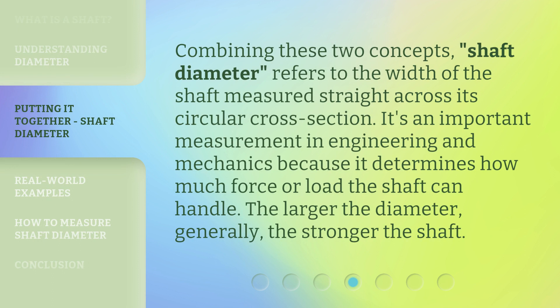Combining these two concepts, shaft diameter refers to the width of the shaft measured straight across its circular cross-section. It's an important measurement in engineering and mechanics because it determines how much force or load the shaft can handle. The larger the diameter, generally, the stronger the shaft.